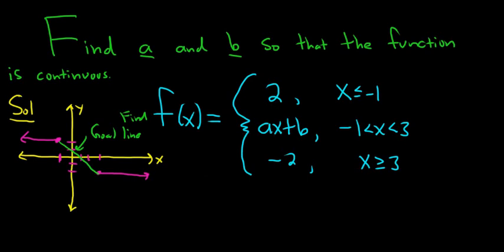So the first piece, the second piece, and the third piece are all continuous by themselves, right? The question is, when you put them together, is there continuity? So the only places where this will fail to be continuous, perhaps, are at negative 1 and at 3. So we have to force this function to be continuous at those two numbers. So to do that, what we'll do is we'll make sure that the one-sided limits are equal and they exist. So we'll start by making it continuous at negative 1.